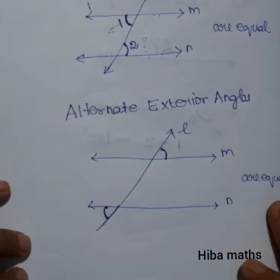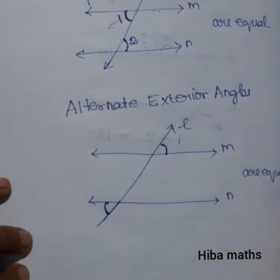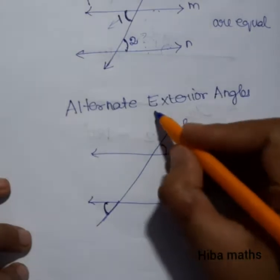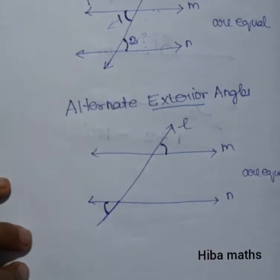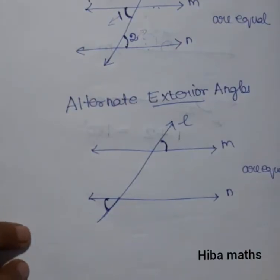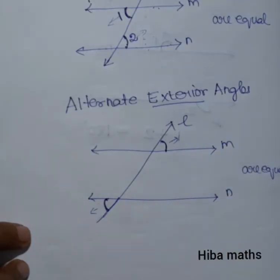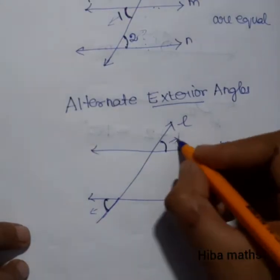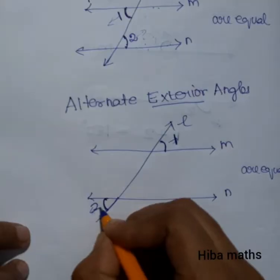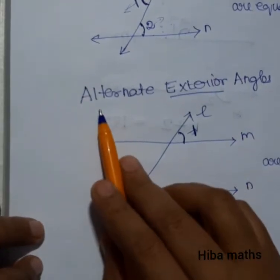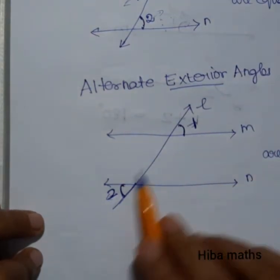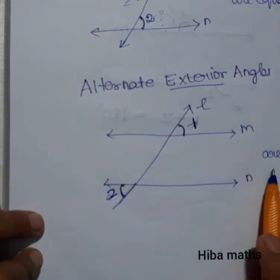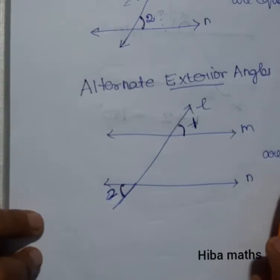Next, we will see alternate exterior angles. Interior is the inside, so exterior is the outside. For two parallel lines, there are two angles on the outside that are on opposite sides of the transversal — those are alternate exterior angles. The right side and the left side. These two alternate exterior angles are equal.